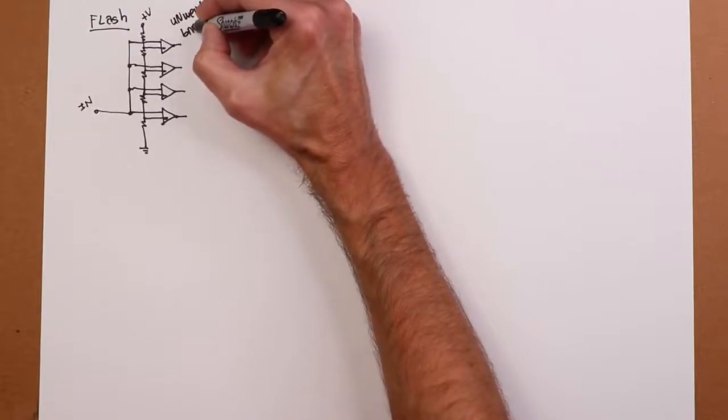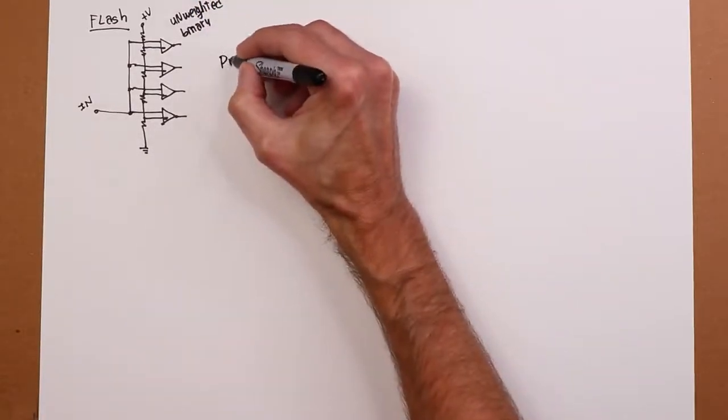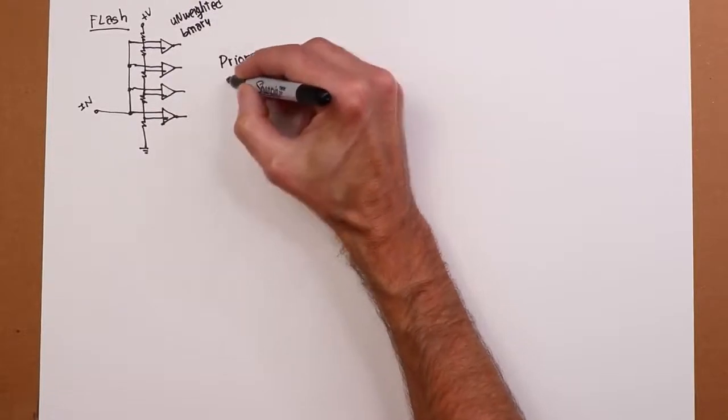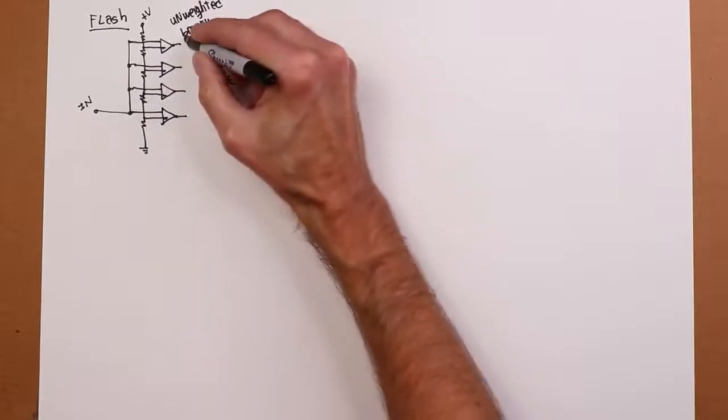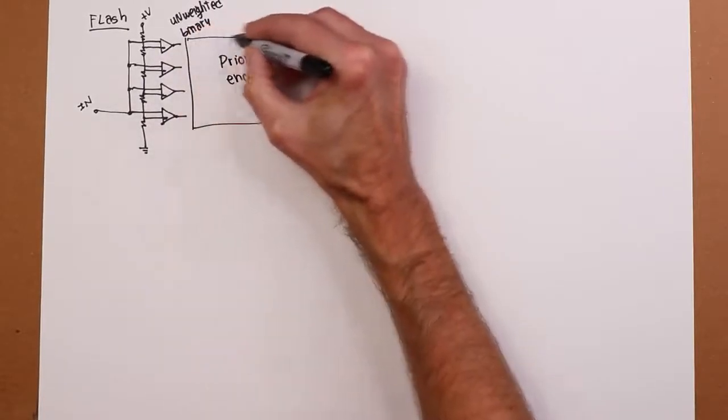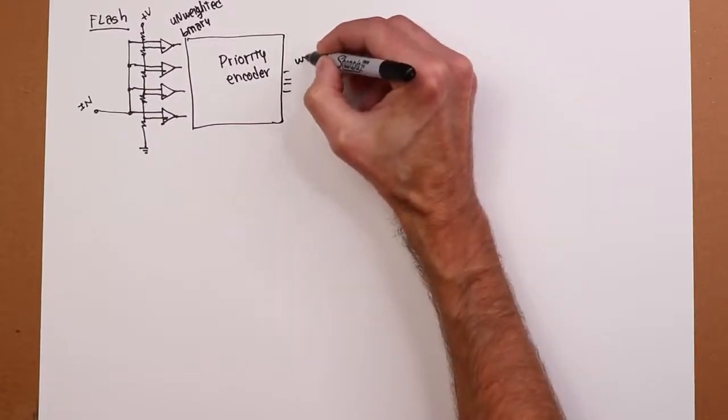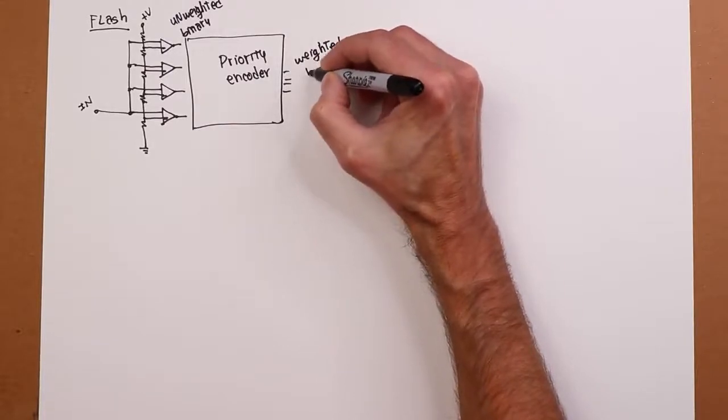Now we take that signal, or set of signals if you prefer, and we run that through something called a priority encoder, this little digital chip. All these lines come into our priority encoder, and then coming out of the priority encoder is weighted binary, in other words normal binary that we think of. Done!